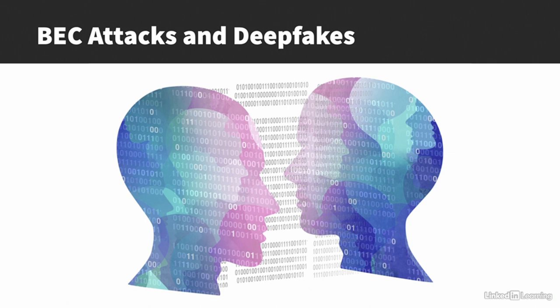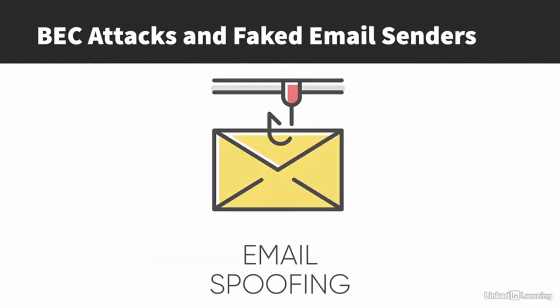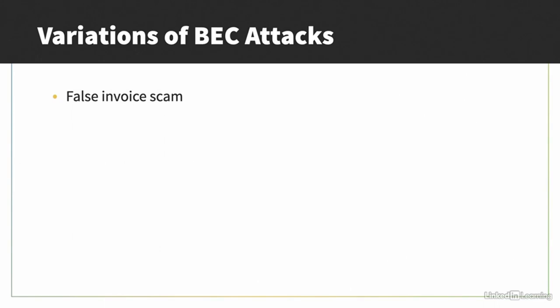BEC criminals will sometimes try to use spoofed emails where the email header is forged to look like it's coming from somewhere it's not, or they'll use lookalike domains. Variations of BEC attacks include the false invoice scam — tricking the finance team to send a vendor invoice payment to a fraudulent account; payroll diversion — tricking HR to change direct deposit banking information; and CEO fraud — tricking the finance team to send an emergency wire transfer for the CEO to a fraudulent account.